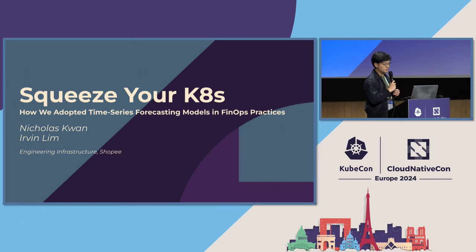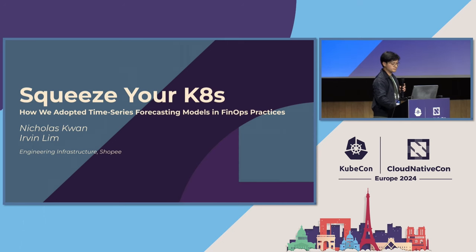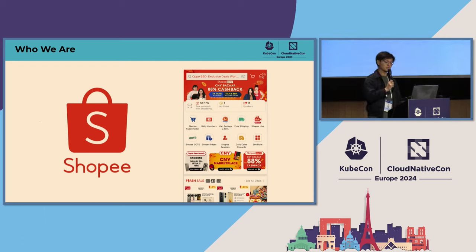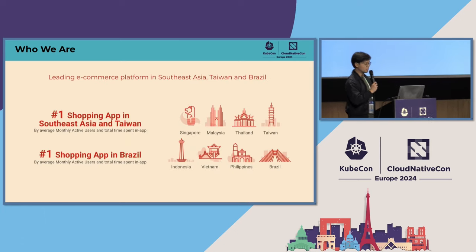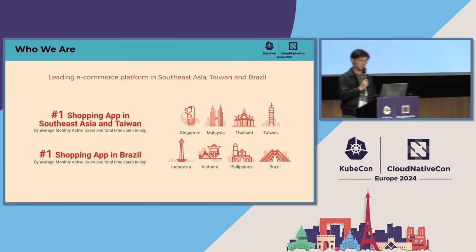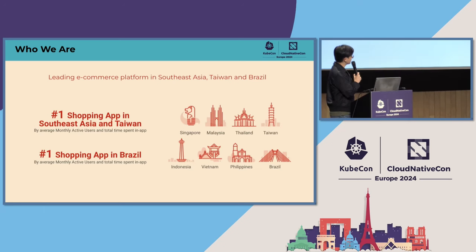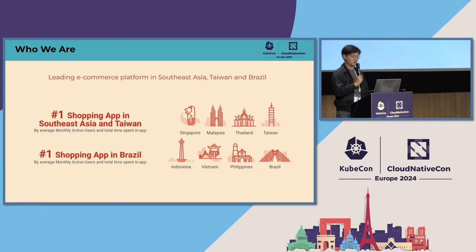Just a quick introduction — both of us are platform engineers working within the engineering infrastructure division at Shopee. We're from Shopee, which is an e-commerce company operating in several markets worldwide. Today we are the leading e-commerce platform in Southeast Asia, Taiwan, and Brazil, and we are the number one shopping app in these markets by average monthly active users as well as total time spent in app.